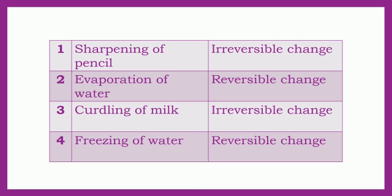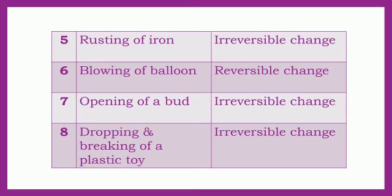Children, the correct answers are. Number 1: Sharpening of Pencil is an Irreversible Change. Number 2: Evaporation of Water is a Reversible Change. Number 3: Curdling of Milk is an Irreversible Change. Number 4: Freezing of Water is a Reversible Change. Number 5: Rusting of Iron is an Irreversible Change. Number 6: Blowing of Balloon is a Reversible Change. Number 7: Opening of a Bud is an Irreversible Change. Number 8: Dropping and Breaking of a Plastic Toy is an Irreversible Change.